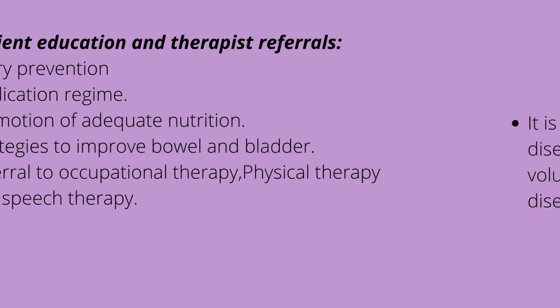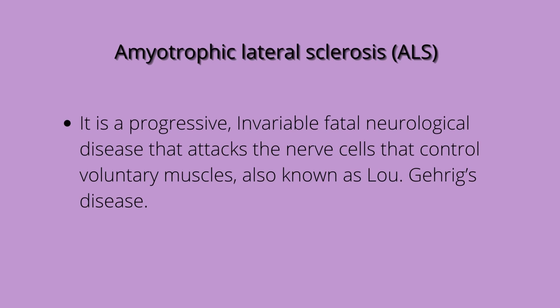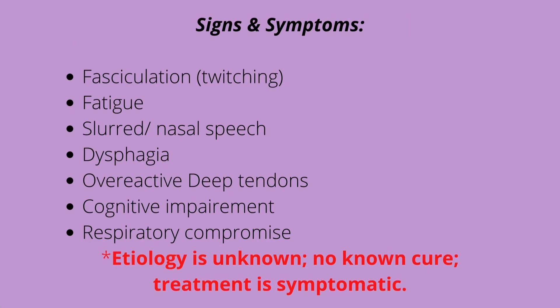ALS is a progressive, invariably fatal neurological disease that attacks the nerve cells — neurons — that control voluntary muscles. It is also known as Lou Gehrig's disease. This disease is detrimental and fatal. Signs and symptoms include fatigue, overreactive deep tendon reflexes, difficulty chewing and swallowing (dysphagia), slurred nasal speech with difficulty forming words, twitching, cramping, and muscle weakness, cognitive impairment in some patients, and eventual respiratory compromise. Death usually occurs from respiratory failure, infection, or aspiration.